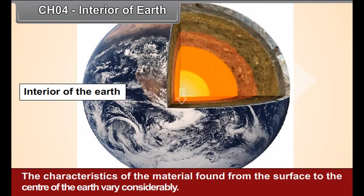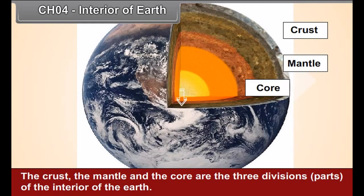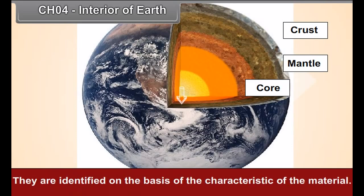The characteristics of the materials found from the surface to the center of the earth vary considerably. The crust, the mantle and the core are the three divisions of the interior of the earth. They are identified on the basis of the characteristics of the materials.